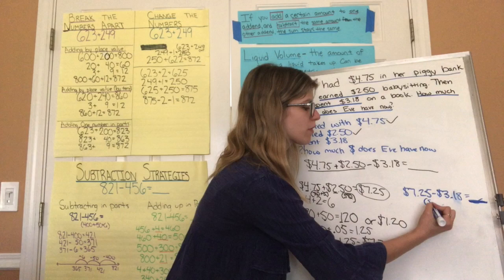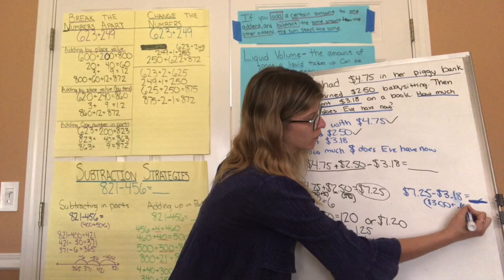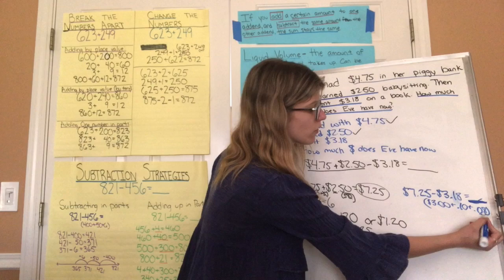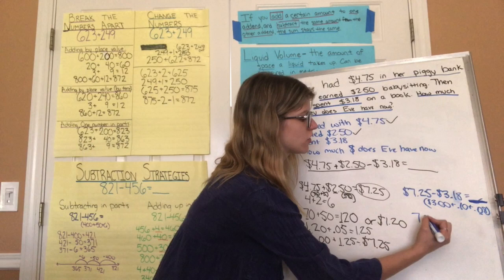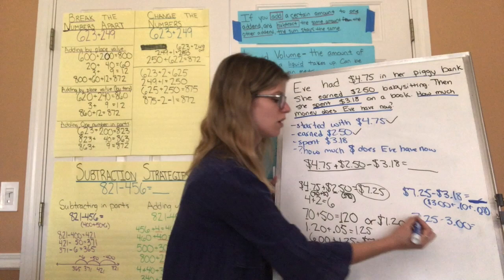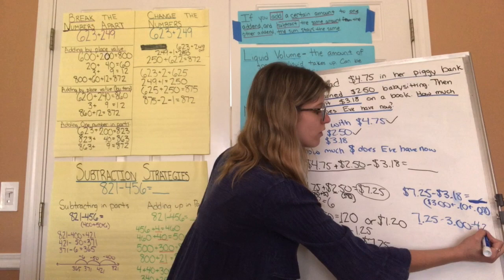For three dollars and eighteen cents, I'm going to break it into three dollars, ten cents, and eight cents — making sure I have that zero to show it's ten cents, not one cent. So seven dollars and twenty-five cents minus three dollars: focusing on the whole dollar, seven twenty-five minus three hundred pennies gives me four dollars and twenty-five cents.